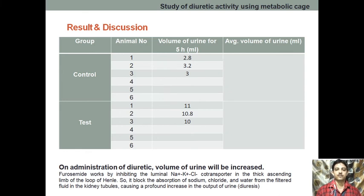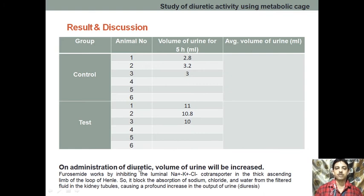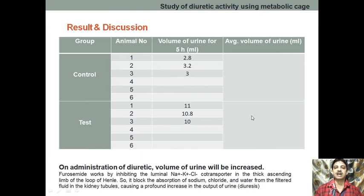That is why frusemide is a high ceiling diuretic. If your test drug shows an increase in urine volume on administration of the diuretic, that confirms diuretic activity. However, if the volume remains the same or decreases compared to the control, then we conclude that the drug does not have any diuretic activity.